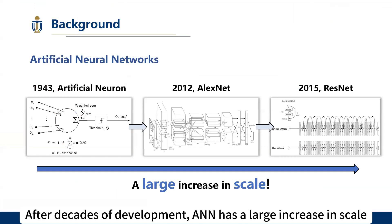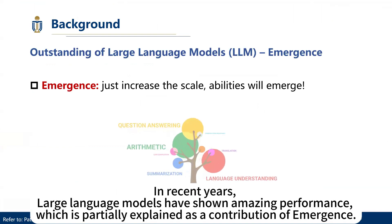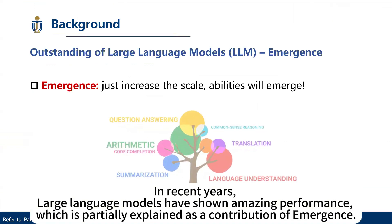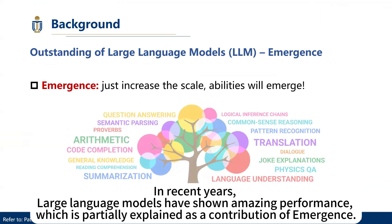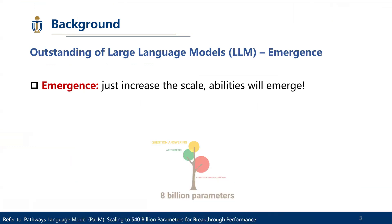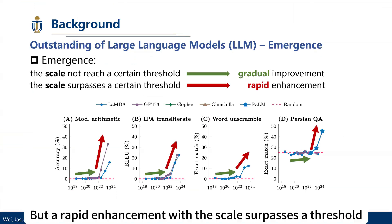After decades of development, ANNs had a large increase in scale. In recent years, large language models have shown amazing performance, which is partially explained as a contribution of emergence. Emergence refers to a gradual improvement with smaller scale, but a rapid enhancement when the scale surpasses a threshold.